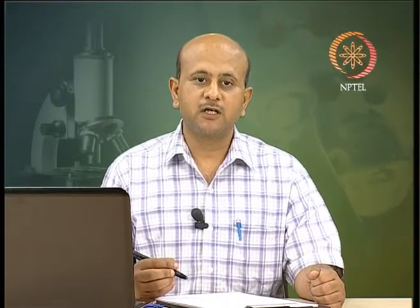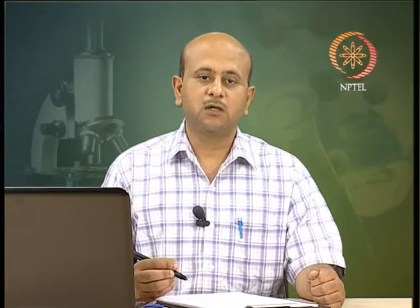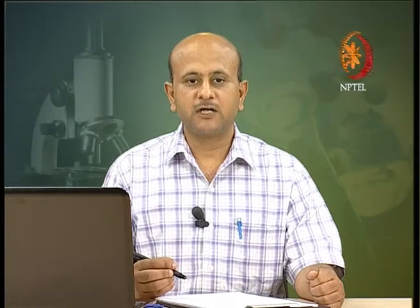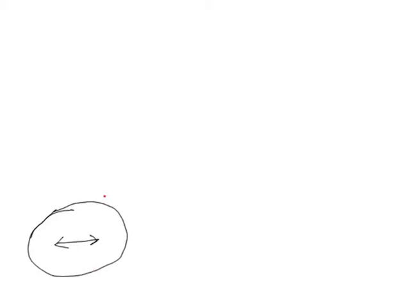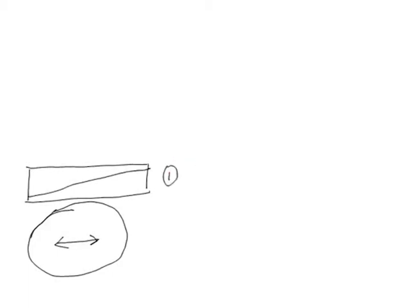In DIC microscopy, there are two prisms inserted. Apart from other lenses like condenser lens and objective lens, the additional insertions are an analyzer, a polarizer, and two prisms. The first prism is just above the condenser lens. The analyzer, whose axis is oriented in the east-west direction, is placed below. Above this will be a condenser and the first DIC prism — the modified Wollaston prism — before the condenser lens.